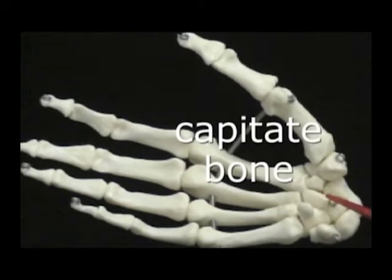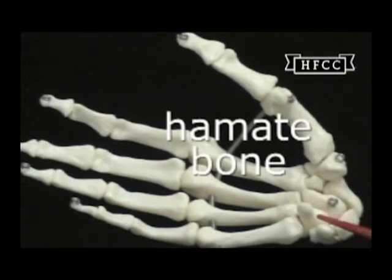The third will be the capitate, articulating at the base of the middle finger, or the third digit. And then going outward, the hamate bone articulates with the fourth and fifth digits. It has a club on it, or a hammer handle.